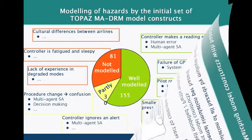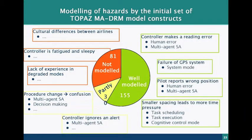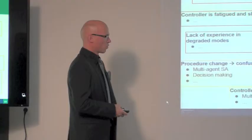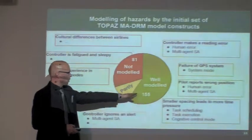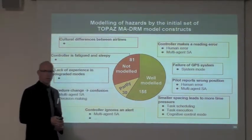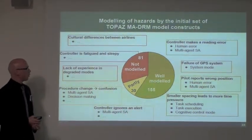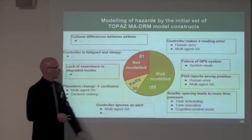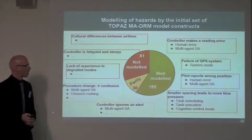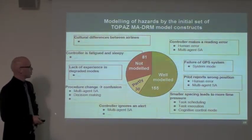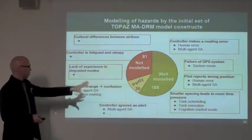Looking at results for modelling hazards by the initial set of Topaz multi-agent dynamic risk model constructs: about 60% of those hazards are well modelled. Some examples like making reading errors are well covered; some are not so well modelled; and some we don't have any models for yet.